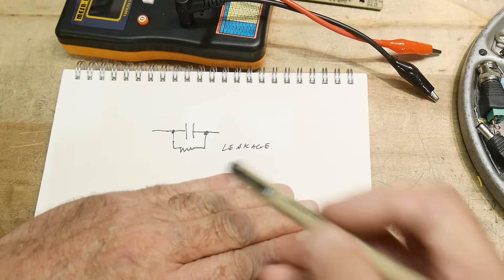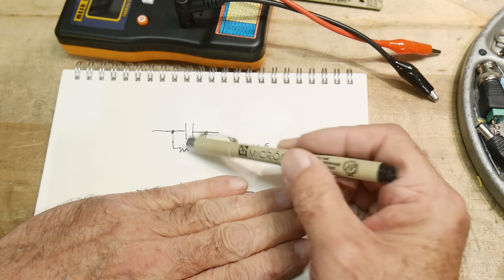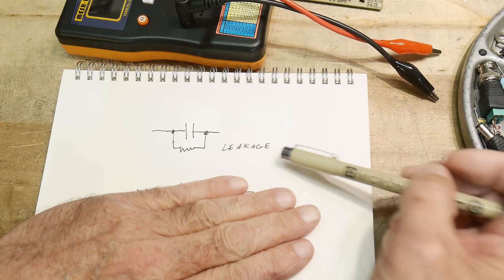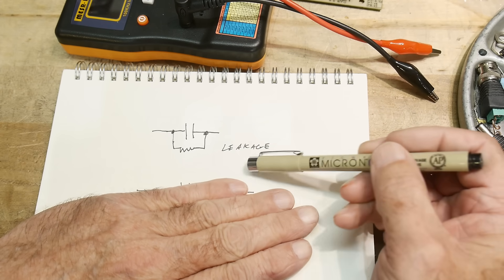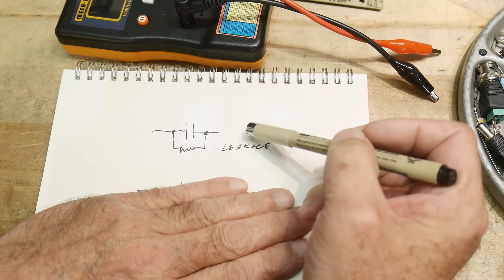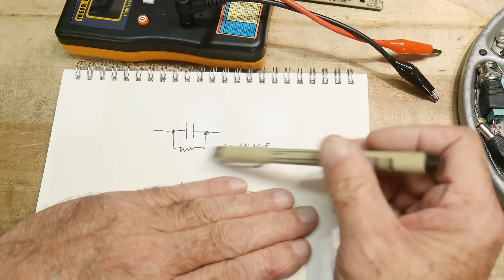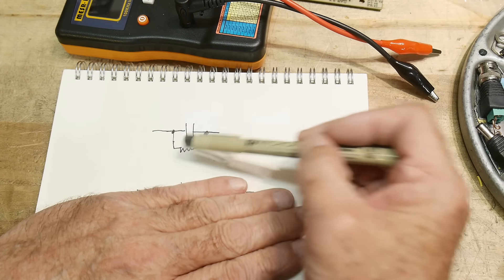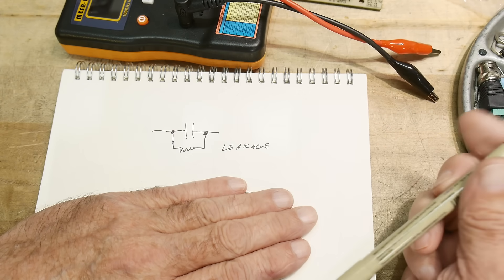Alright, so if we have a capacitor, it might have a resistor that looks something like a resistor because there's leakage. The capacitor can be leaky, and that can act like a resistance. The capacitor should block DC, but sometimes it leaks a little bit, and that can be modeled as a resistor in parallel with the capacitor.